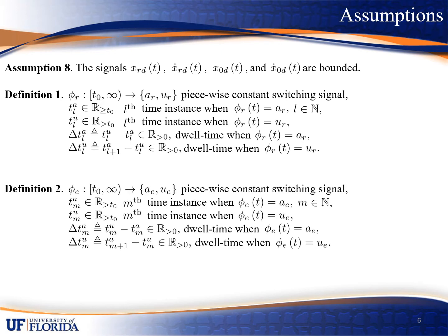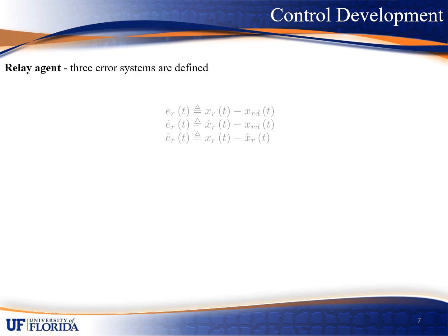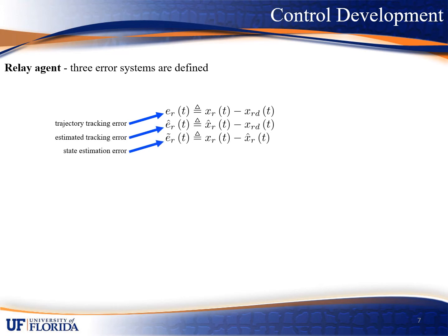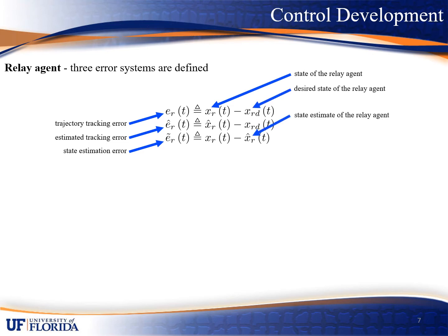To compensate for the feedback intermittency of the problem, we define phi_R and phi_E as the constant switching signals for the relay agent and explorer agent respectively, where T_{l,a} denotes the alpha time instant when feedback is available, and T_{l,a} denotes the alpha time instant when feedback is unavailable, and delta T_{l,a} denotes the corresponding dwell time conditions. To quantify our control objective, we define three error systems for the relay agent: E_R, E_R hat, and E_R tilde, which denote the trajectory tracking error, the estimated trajectory tracking error, and the state estimation error. Here X_R denotes the true state, X_{Rd} denotes the desired state, and X_R hat denotes the estimated state. Note that E_R equals E_R hat plus E_R tilde, and this relationship will be used in our stability analysis.